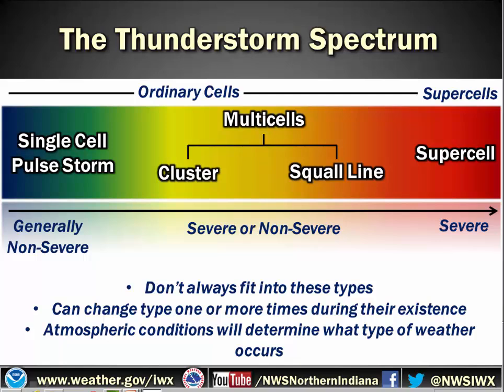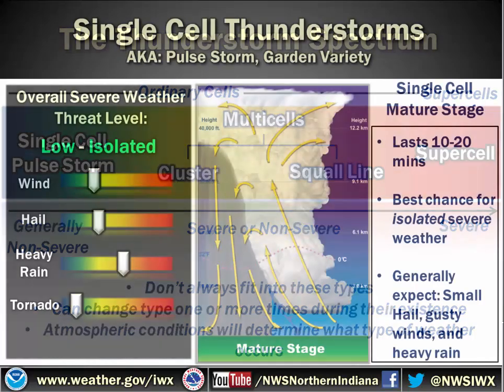Note that the atmospheric conditions will determine what kind of weather occurs. So while we're saying generally you don't see severe weather with single cell pulse storms, if you have a certain type of environment, you might see some isolated severe weather. With that being said, let's jump right in and learn some more details about these various types of storms.